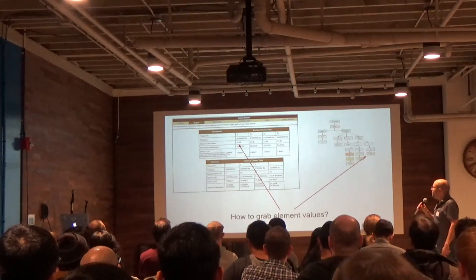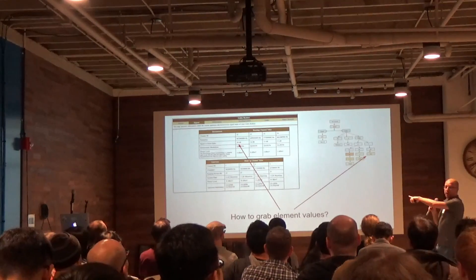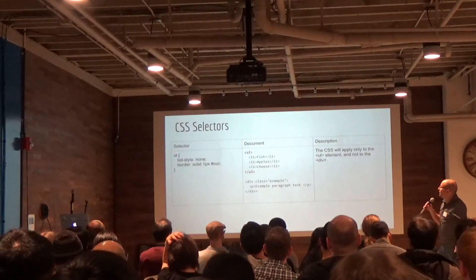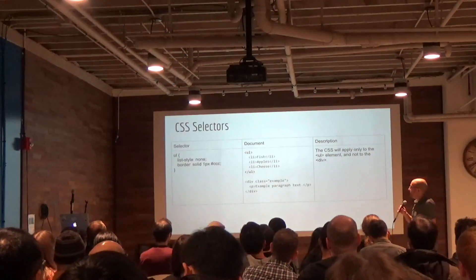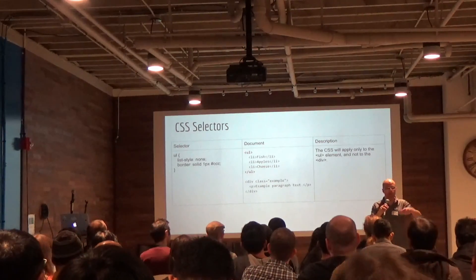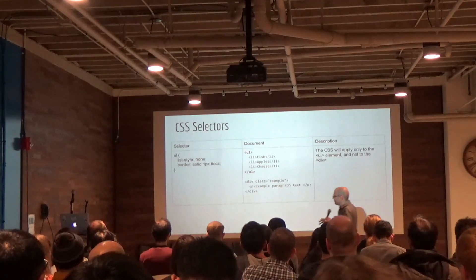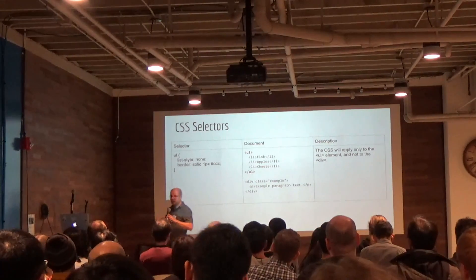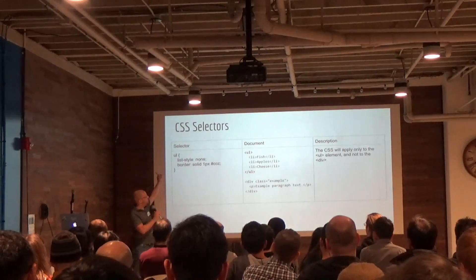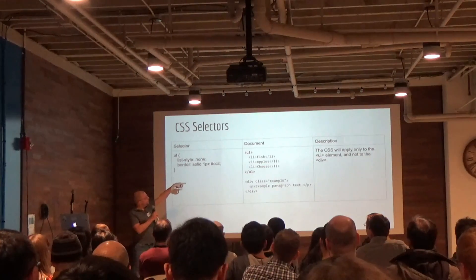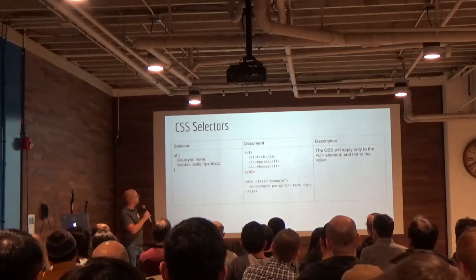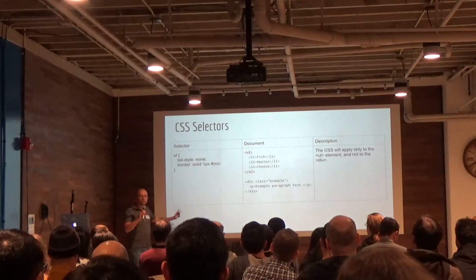The next question is how do you grab a particular element value from this tree that represents your HTML? That's where CSS selectors come in. You're probably more accustomed to seeing CSS selectors in the context of writing HTML and applying a style sheet to it. Here's a couple of examples. The selector text on the left is just 'ul' — two characters. It matches the UL tag in the document snippet, but nothing else in there. That's the simplest possible selector.